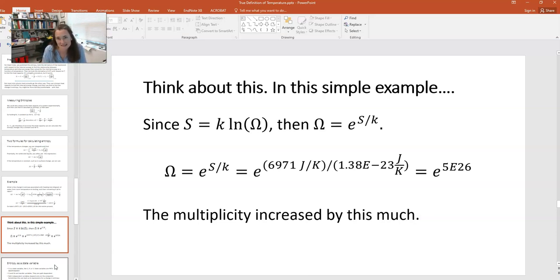So if I do that, then my multiplicity will change by the amount e to the power of 5 times 10 to the 26, which is a very, very large number. So that's how much the multiplicity increased. That's how much the number of ways the system could be arranged increased from taking room temperature water and going to boiling it all away as a gas. That's a huge increase in multiplicity.